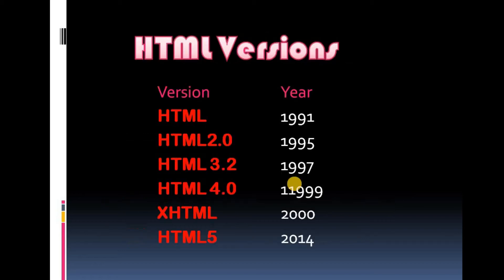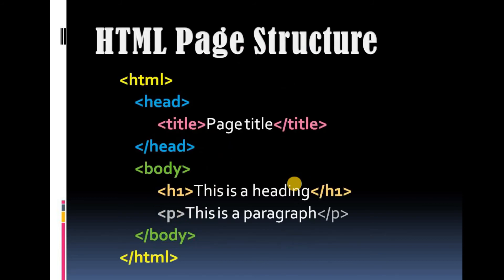HTML has had several versions: HTML 2.0, HTML 3.2, HTML 4.0, and HTML 5.0. There have been six versions of HTML overall.